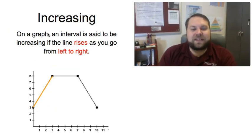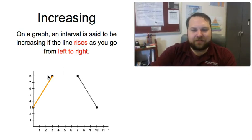I can also find this out just by looking at the graph. As I go left to right on the graph, if this interval is increasing, it's going to be going upward. You can think of it as going up a hill if you're traveling left to right, and that interval would be said to be increasing.